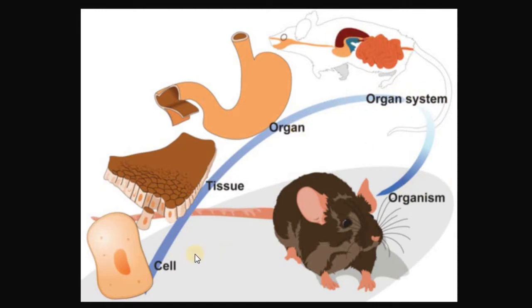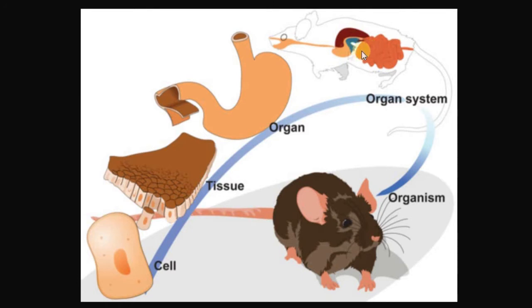For example, here we have a cell. A group of these cells makes this tissue. A group of these tissues makes this organ — the stomach. A group of different organs — the stomach, the liver, the pancreas, the intestine, the esophagus — make this system, which is the digestive system.